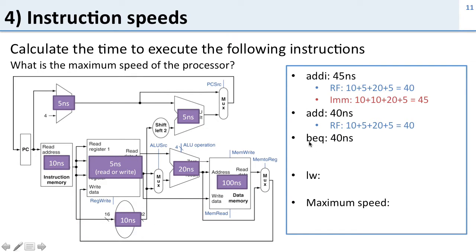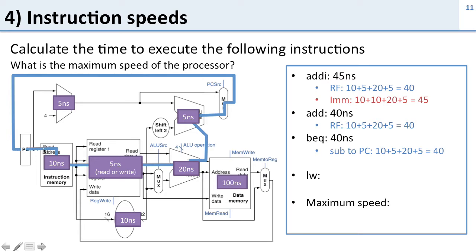Now let's look at branch equal. We have to subtract and get to the PC. The path goes through instruction memory, reads register file values, does the subtraction to see if they're equal, goes to the mux to select the right next value, then back around — that's 10 + 5 + 20 + 5 = 40 nanoseconds. There's another path through the adder that takes only 5 nanoseconds, which is shorter than the main path, so it doesn't affect the critical path. Branch equal takes 40 nanoseconds.